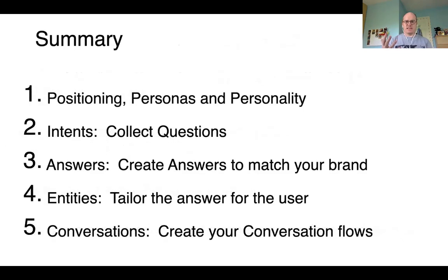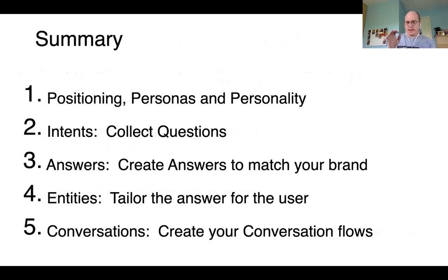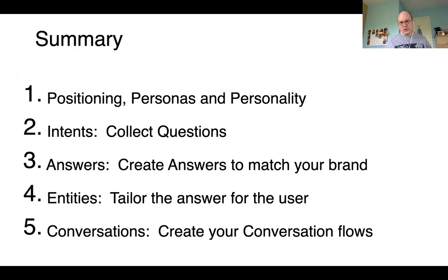Summary — five things you need to worry about: personality and roles; collecting questions and deciding how to label them; writing answers that match your brand; entities — unique things about the domain that you need to capture; and conversation flows back and forward. All five combined make a really good chatbot, but if you worry too much about one and not enough about the others, everything falls apart.